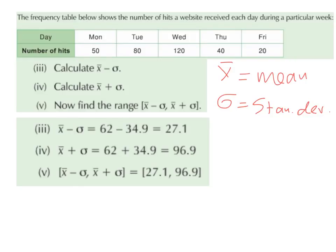Now find the range. So it's the mean minus the standard deviation, which we got to be 27.1, comma the mean plus the standard deviation, which we got to be 96.9.